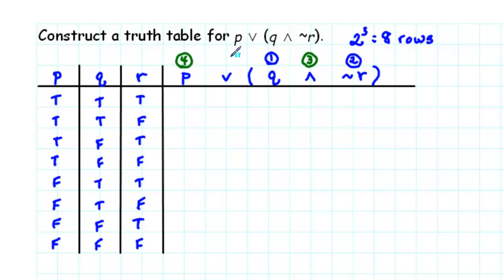And then finally, in our last step, we'll form the disjunction of columns 4 and 3. To fill in column Q, we just copy the truth values from column Q. Just write down trues and falses two at a time.